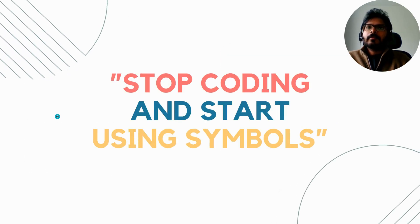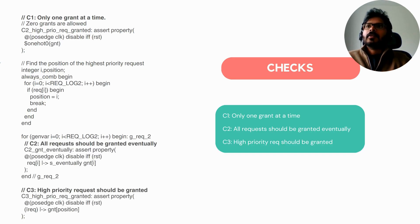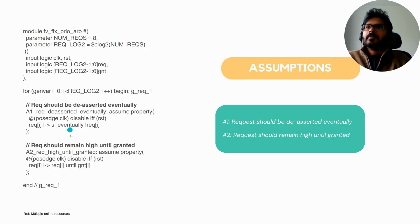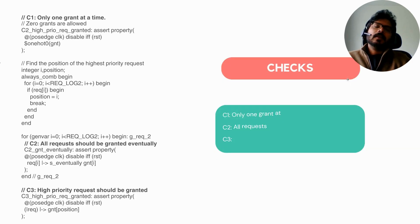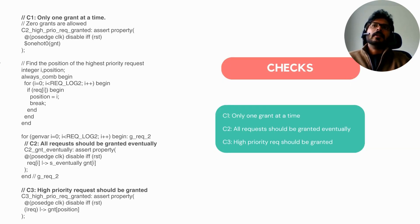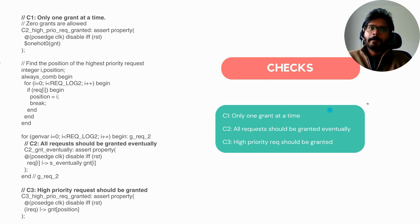Before moving on — did you notice the number of generate loops being used? For the assumptions and checks there are multiple generate loops, and with eight requesters you end up with perhaps 16 or more properties and assumptions. So do you really need all of them? The answer is no.